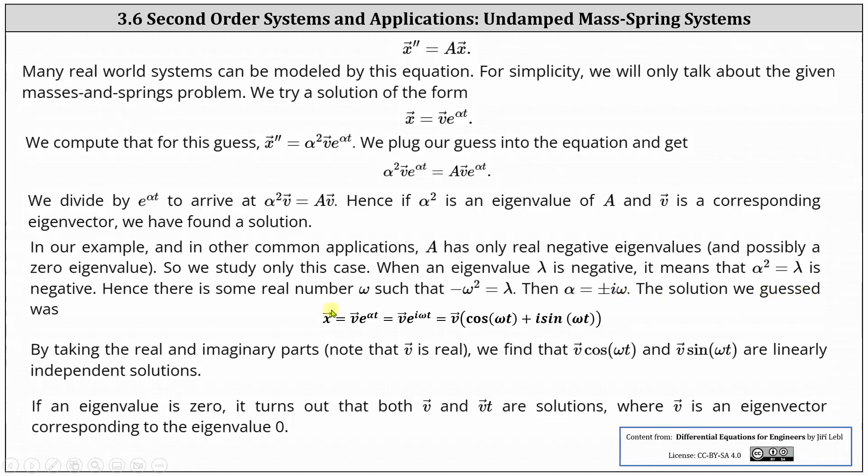Recall the solution we guessed was X equals V times e to the power of alpha T. Using alpha equals i omega, we have V times e to the power of i omega T. Applying Euler's formula, we have X equals V times the sum of cosine omega T and i sine omega T. By taking the real and imaginary parts, we find that vector V times cosine omega T and vector V times sine omega T are linearly independent solutions.